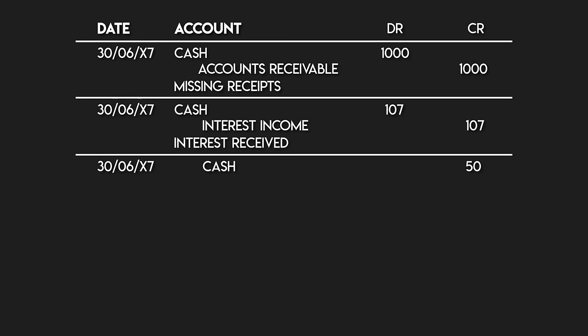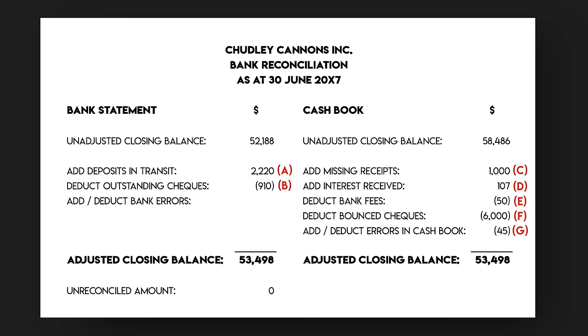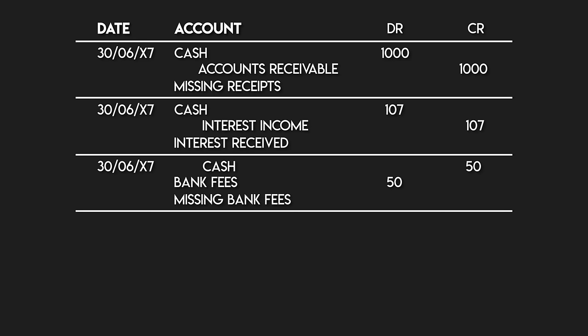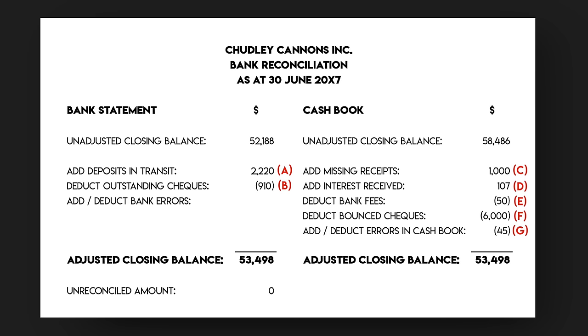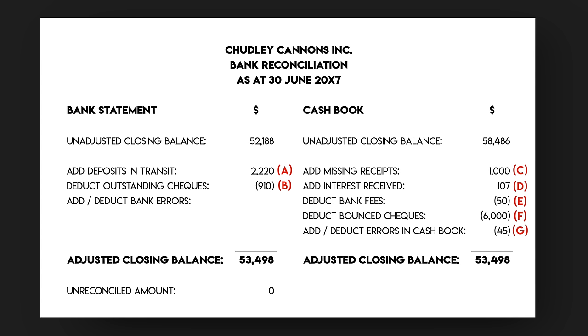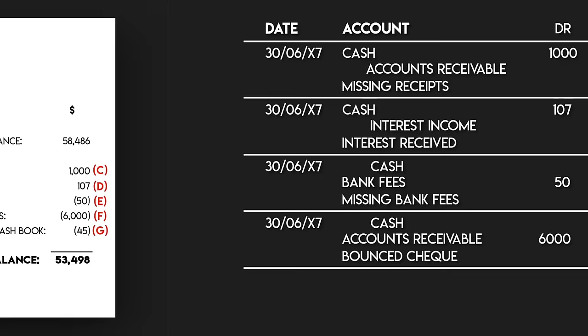For transaction E, bank fees of $50 — we credit cash to decrease it and debit bank fees to recognize the expense. Transaction F was for a $6,000 bounced cheque — we credit cash to reduce our cash balance and debit accounts receivable to increase it, because the customer still owes us $6,000. The final journal is for transaction G, which is an error correction. We had mistakenly recorded a cheque payment in our cash book at $7,005 when it was actually meant to be $7,050. So we credit cash to recognize the higher payment value and debit accounts payable to bring those down. All that's left to do is post this journal and the general ledger will be updated for the June period to reflect the true cash balance.